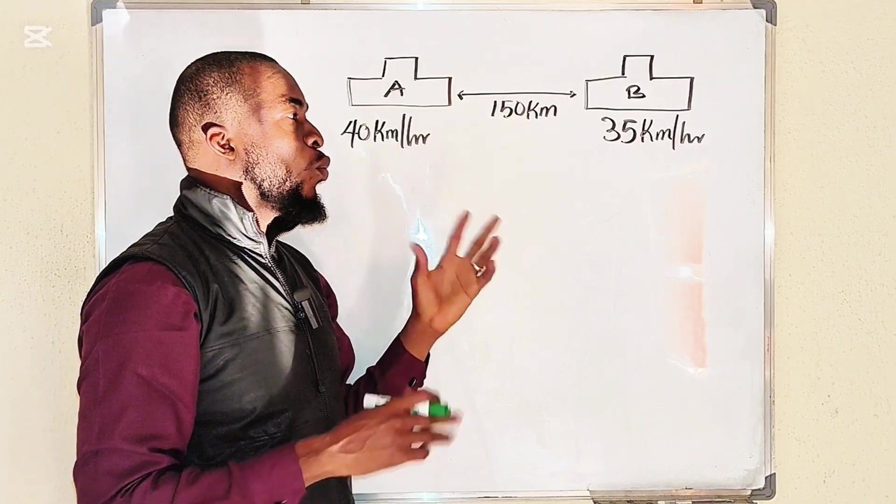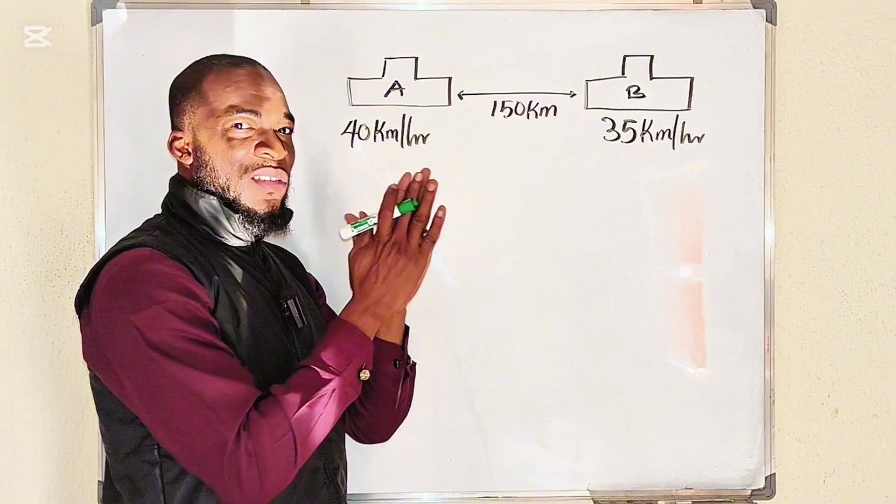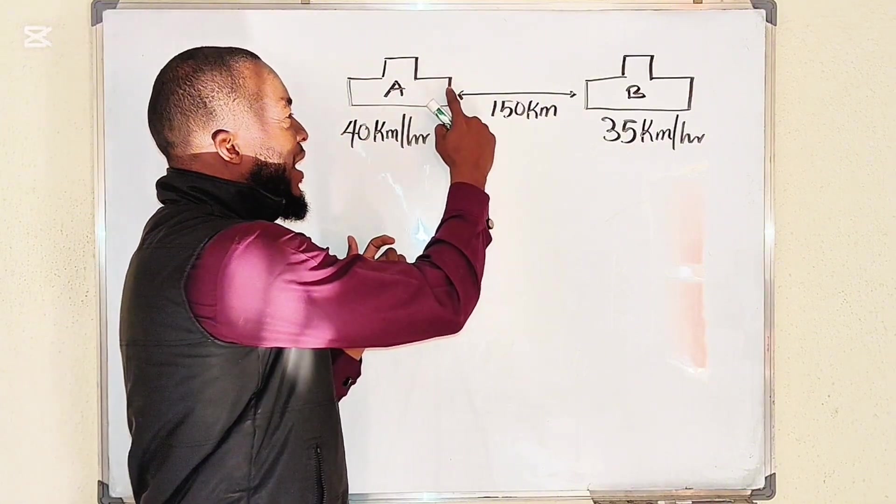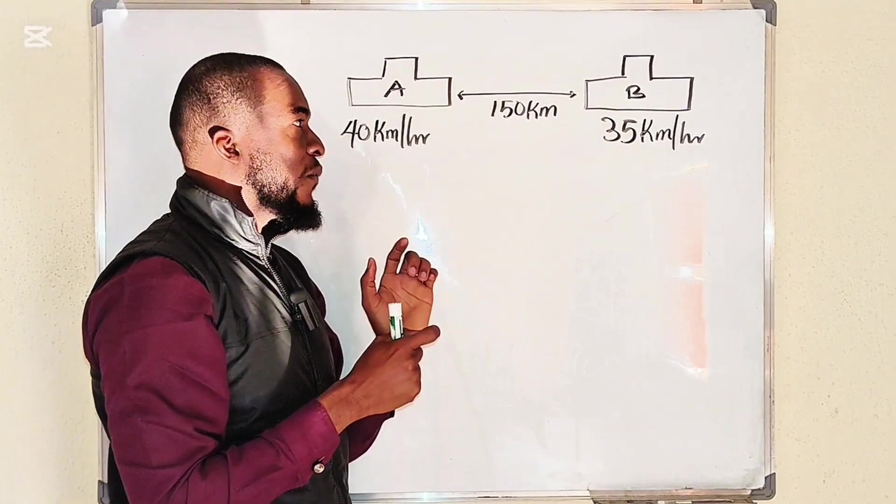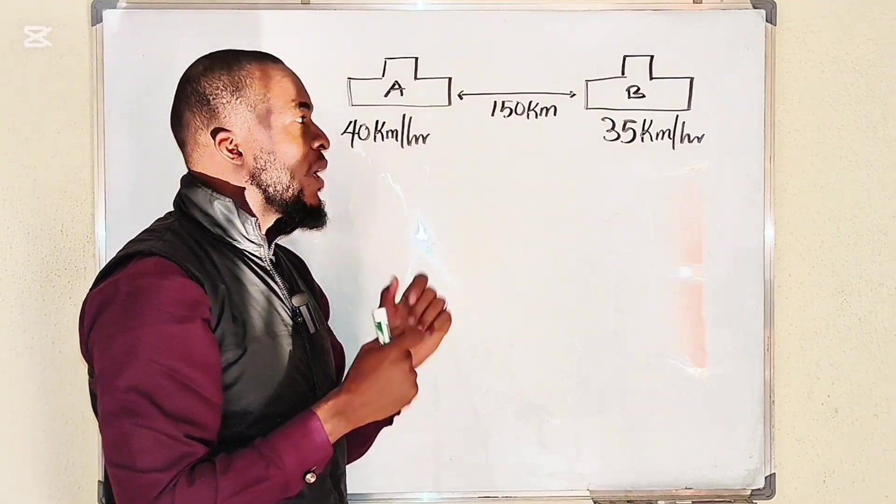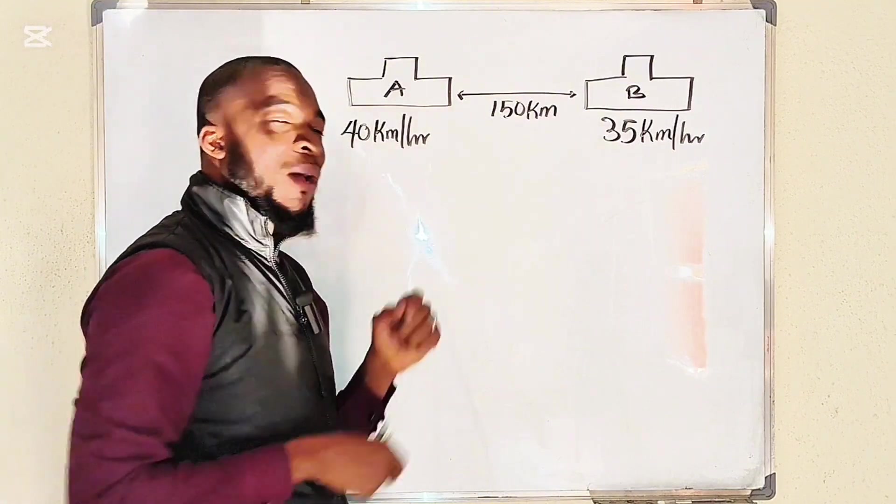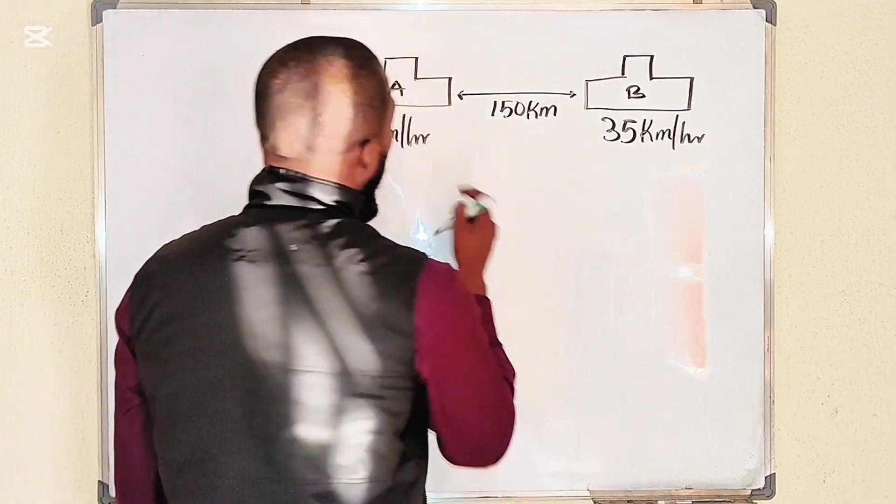Let me show you the traditional way to do that. Since this one is moving faster, let's assume they are going to meet at a certain point here which is closer to this car. From this car down here we're going to assume it is x.